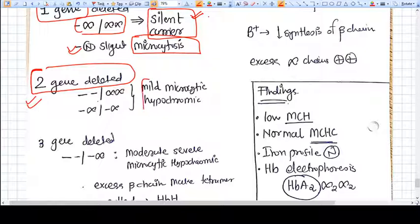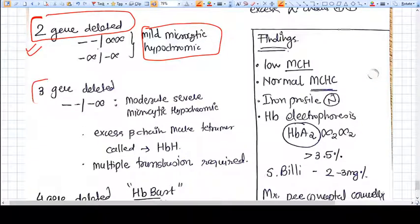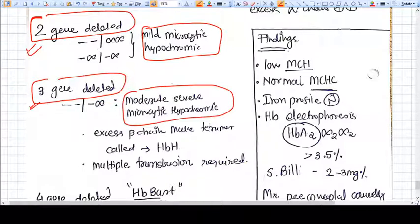If three genes get deleted, we get moderate to severe microcytic hypochromic anemia. With two gene deletion we had mild anemia, but now with three genes deleted we have moderate to severe anemia. Always remember in thalassemia the anemia will be microcytic hypochromic.